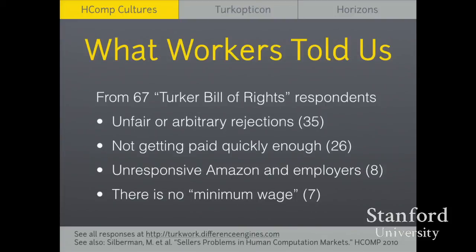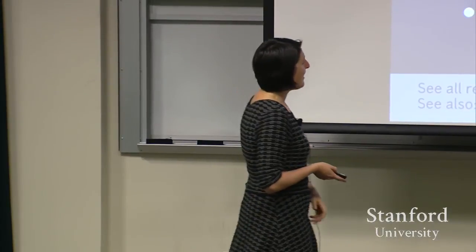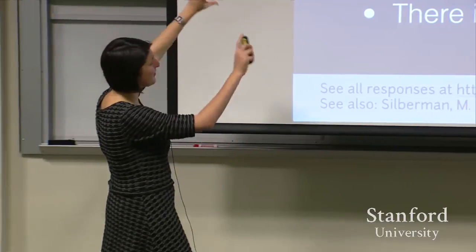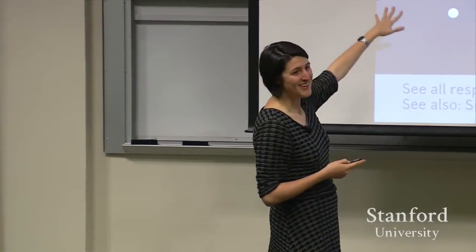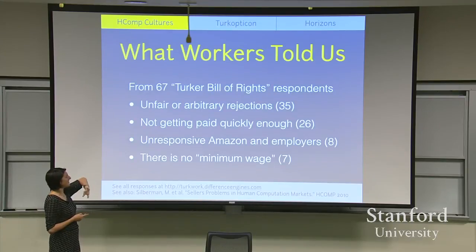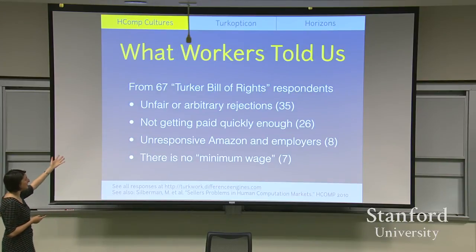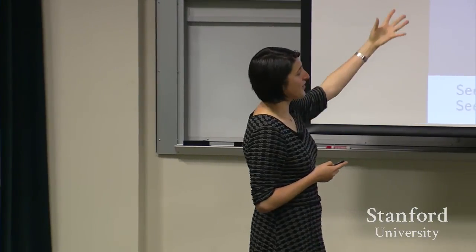Amazon employers seemed generally unresponsive to workers' concerns because there were way more workers than employers — if one worker went away, another would fill the spot. A much smaller number complained about no minimum wage. But the upshot was that many things we assumed would be a problem, like the lack of minimum wage, wasn't the dominant complaint. There were things neither the empowerment nor exploitation sides had thought of that workers recognized as really salient, immediate problems.